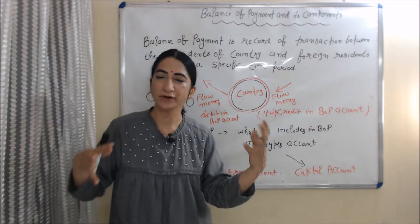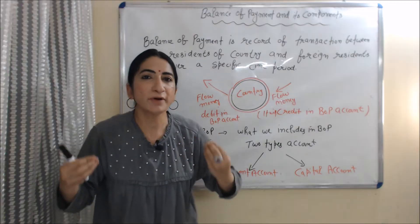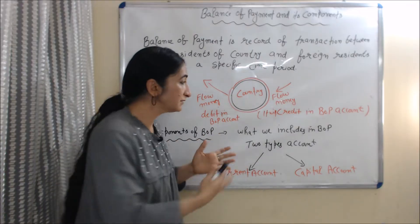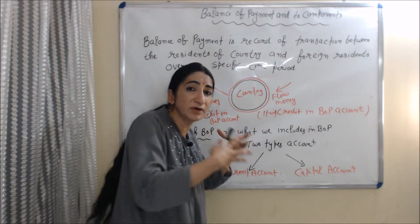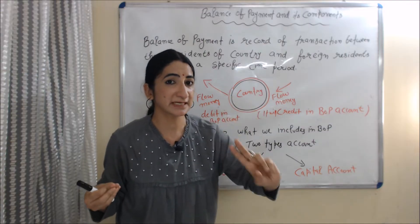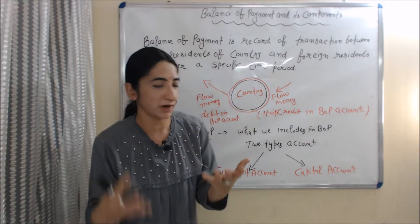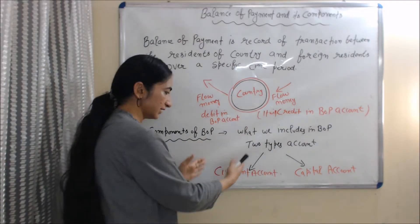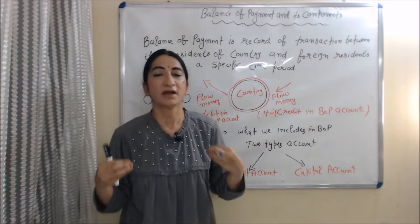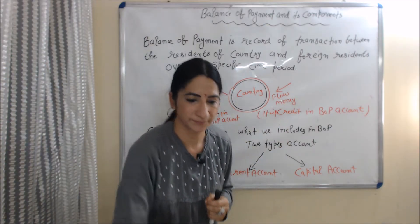Now, what are the components of balance of payment? Components of balance of payment means what we include in the balance of payment. In balance of payment, we basically include two types of accounts: current account and capital account. One by one we will discuss about each account.